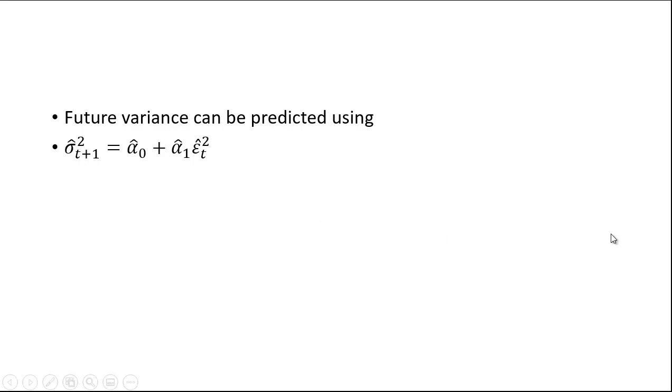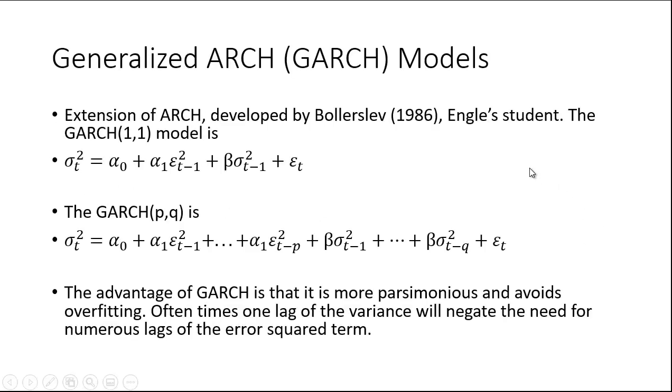Let me mention GARCH, or generalized autoregressive conditional heteroskedasticity. It's an extension of the ARCH model developed by Tim Bollerslev in 1986. He was a student of Engle's at the University of California San Diego. What he's done is simply taken, for example, the ARCH(1,1) model and added another term—one lag period of the variance from the previous period.